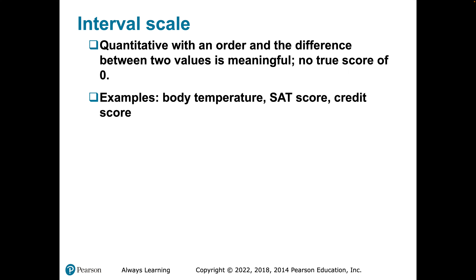The key component of interval scale is twofold: it's definitely quantitative, but no true score of zero exists. A body temperature of zero doesn't mean the absence of temperature — it's just a value within the scale. An SAT score has a floor around 200, not zero. A credit score of zero doesn't mean an absence of credit score; it's just an extremely low score based on the scale of measurement.